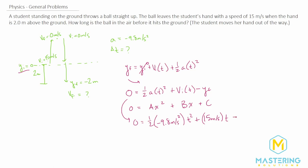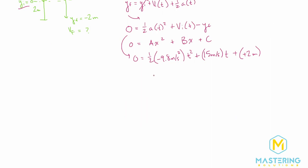And then we're going to subtract y final. In this case, y initial is zero, and y final is negative two. So we'll have negative two meters, which will turn this into a positive two. So our a will be negative 4.9, b is positive 15, and c is positive two.